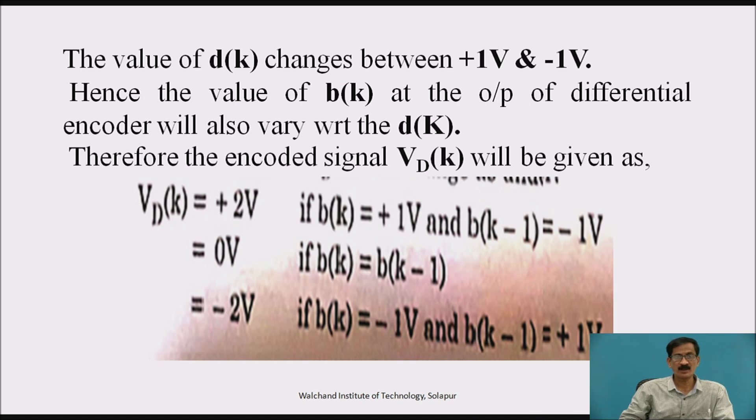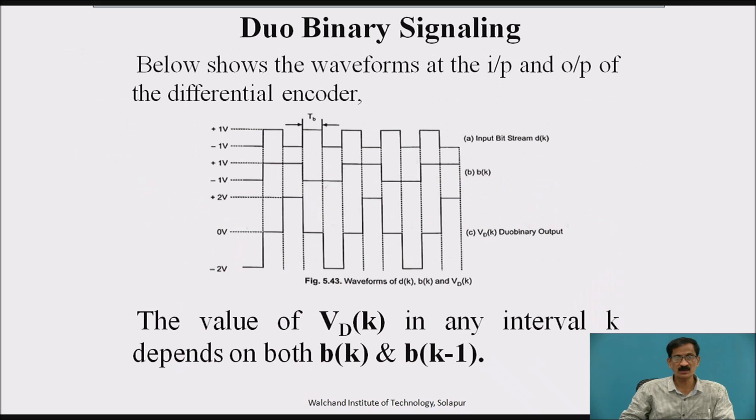So v d k, the value of d k changes between plus 1 and minus 1. Hence, the value of b k at the output of differential encoder will also vary with respect to d k. Therefore, the encoded signal v d k will be given as v d k equals plus 2 volt if b k is plus 1 or b k minus 1 is minus 1 volt, or it is 0 if b k and b k minus 1 both are same, or v d k output is minus 2 volt if b k minus 1 is plus 1.